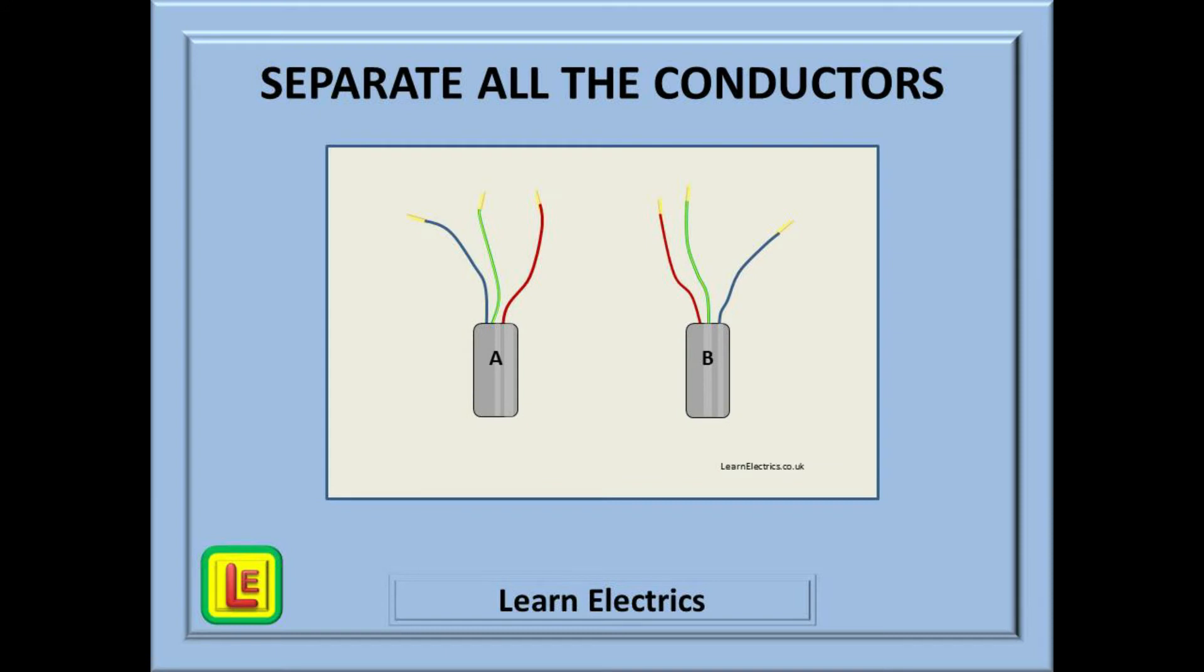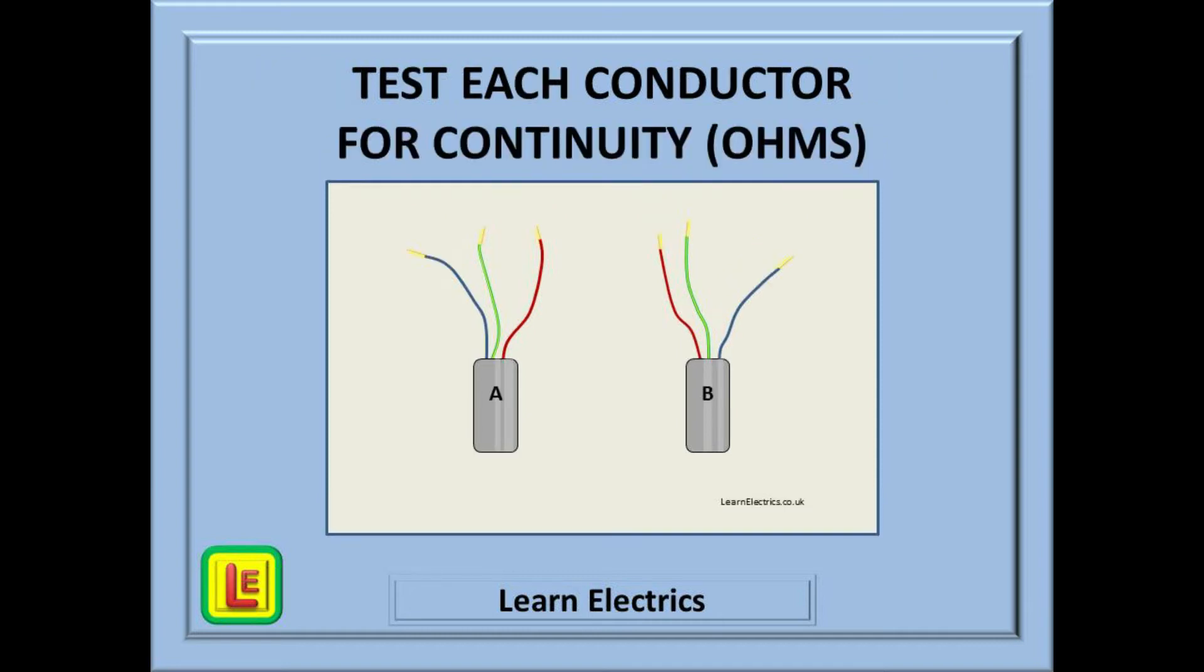The first step after safe isolation is to separate the two cables and all six conductors from each other. Now we can test each pair of conductors for continuity using the low ohms resistance setting on our meter. Check that your meter is working correctly before starting.